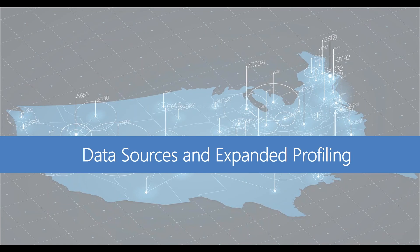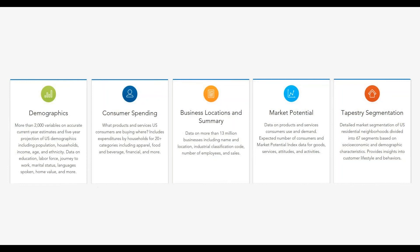Thank you, Brian. Now that Brian has discussed the importance of GIS and how data is highly used in the out-of-home industry, we'll discuss detailed audience profiling, which includes over 6,500 population variables, and how they can really be of help for you as the user to help understand how to expand profiling for research studies. ESRI gives us the capabilities to access several different data sets in one place. As you can see here, we have demographics, consumer spending, business locations and summary, market potential, and tapestry segmentation data. We'll talk about each one of these in a little bit more detail.